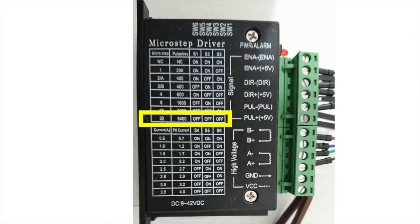For example, off, off, off corresponds to 6400 pulses needed to achieve one revolution of the motor.